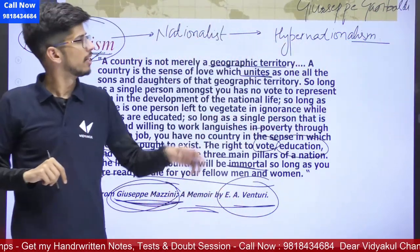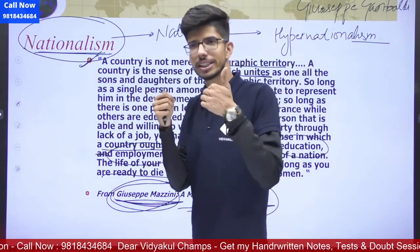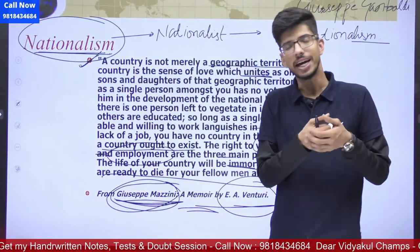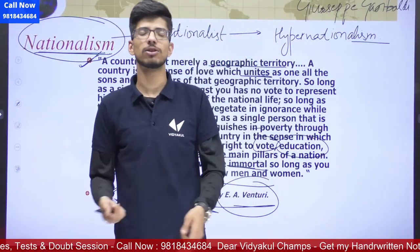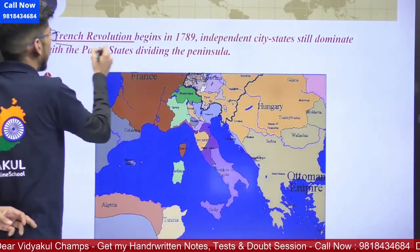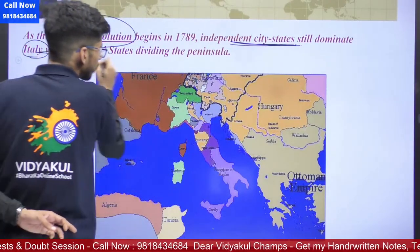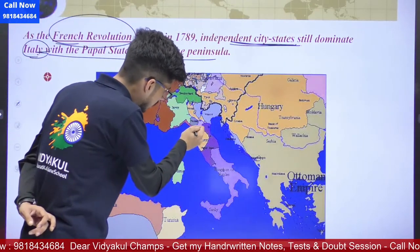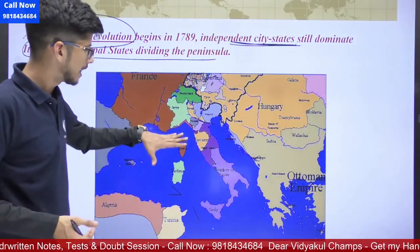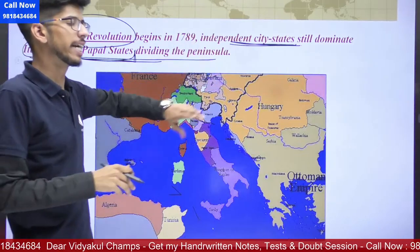Remember this name: Garibaldi. So the first names you should know are Giuseppi Mazzini and Garibaldi. Together they formed Young Italy — a society whose main objective was to uproot the hereditary monarchies and to unite all the Italian peninsula and all the Italian states. As the French Revolution began in 1789, independent city-states still dominated Italy, with the papal state dividing the peninsula.